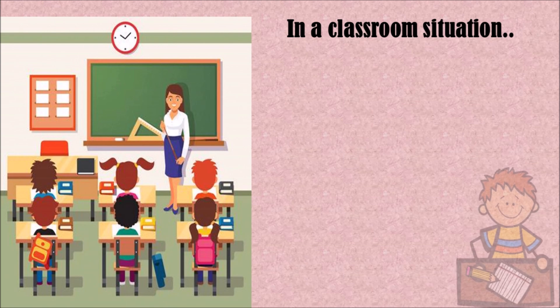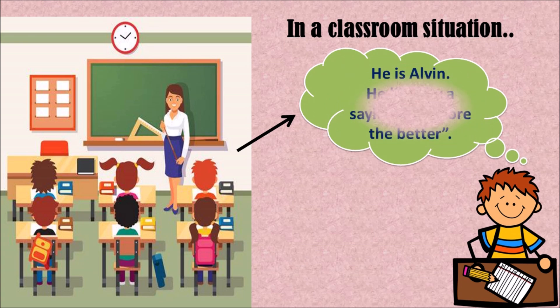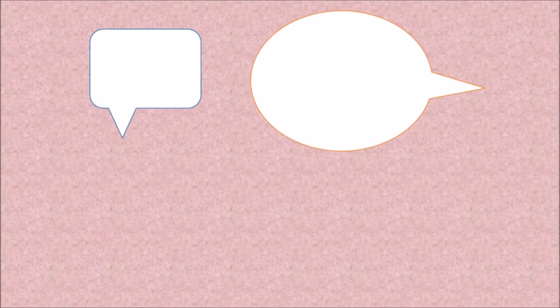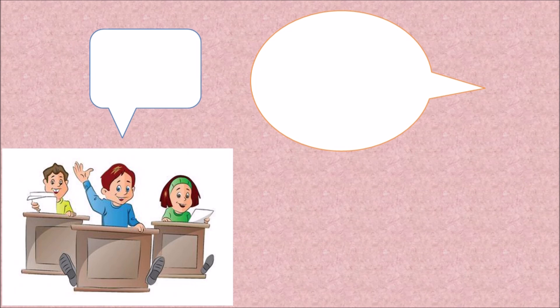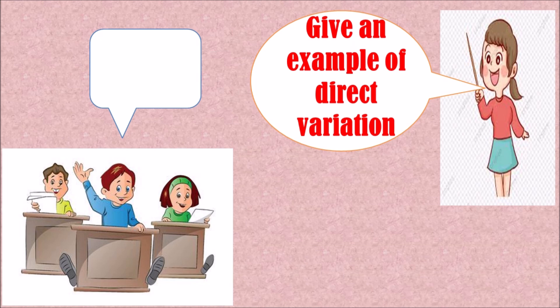Let's start the lesson. In a classroom situation, the teacher is having a graded recitation. He is Alvin. He lives by a saying, the more the better. Let's see if he can pass the graded recitation. Give an example of direct relations. More birds, more fun!